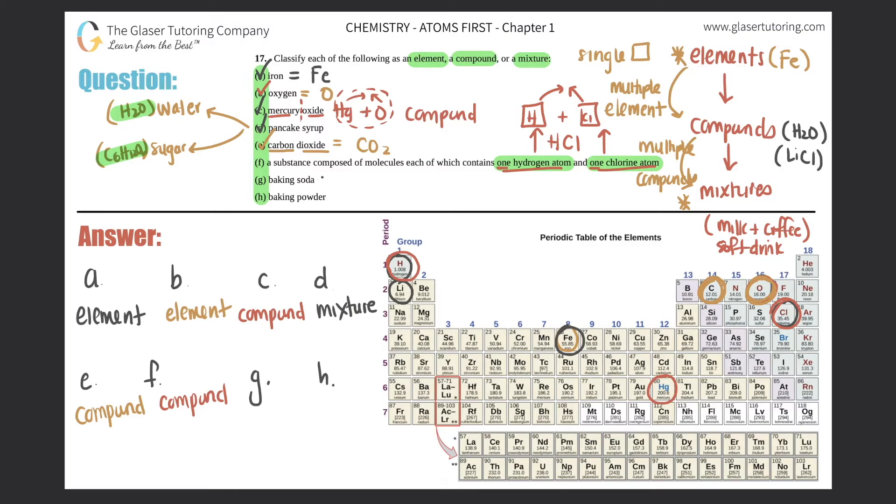Baking soda: If you looked up baking soda, it's just the better way of saying the actual compound. Baking soda is actually sodium bicarbonate, NaHCO3. Let's analyze it: we have sodium (Na), hydrogen (H), carbon (C), oxygen (O) - they're all coming together to form one molecule. This has to be a compound.